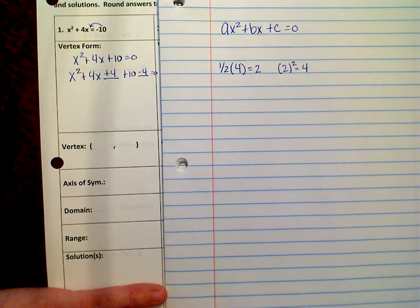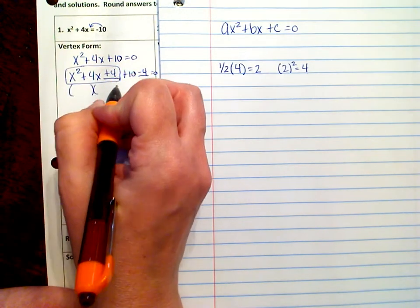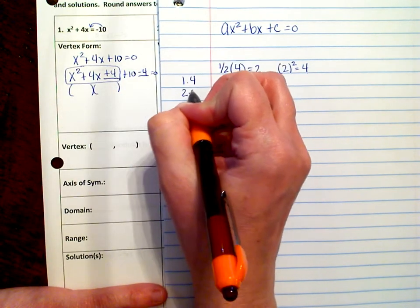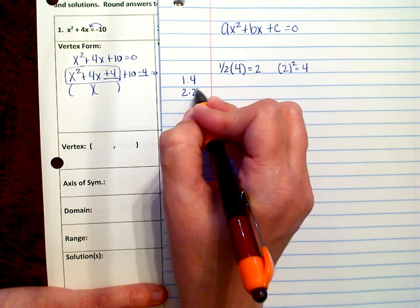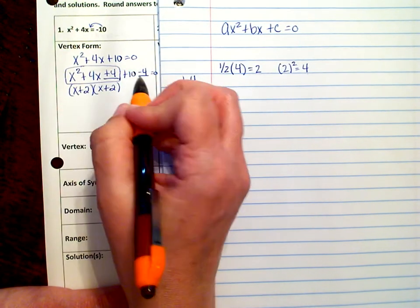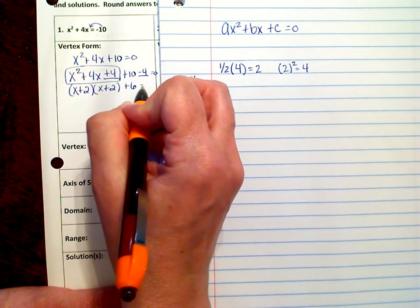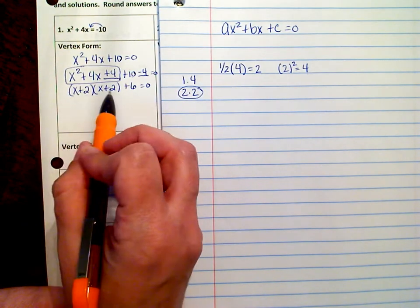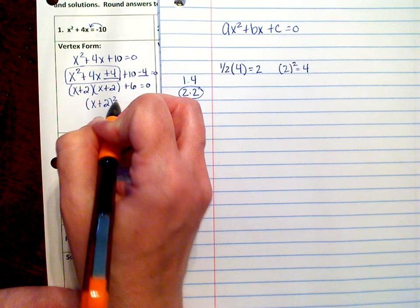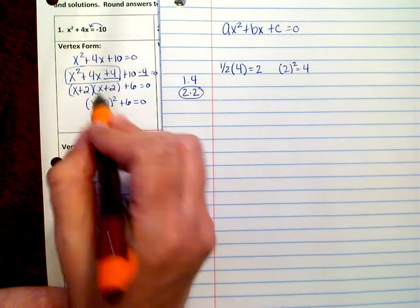And then we're just going to factor now. So we're going to take this part right here, and we're going to factor that into two sets of parentheses. And we're looking for factors of 4 that will add to give me 4. Remember, that's 1 and 4 and 2 and 2. And so the ones that are going to add to give me 4 are 2 and 2. So x plus 2 and x plus 2. And then we're just going to do this calculation. 10 minus 4 is positive 6. And since these parentheses are the same, and they will be the same, so if they don't turn out to be the same, you've done something wrong, we're going to combine them together. x plus 2 squared plus 6 equals 0. So this is vertex form. That's your answer for vertex form right here.